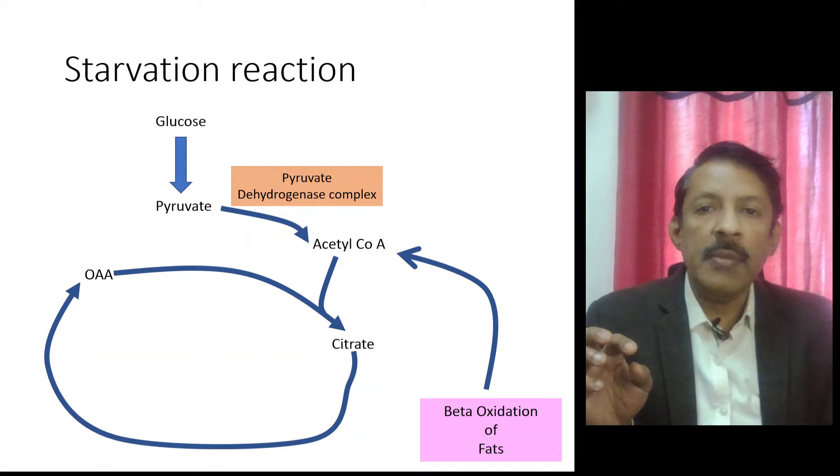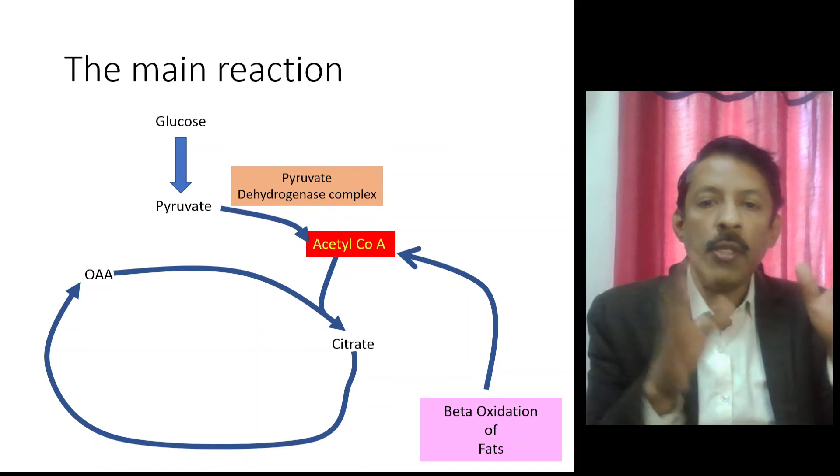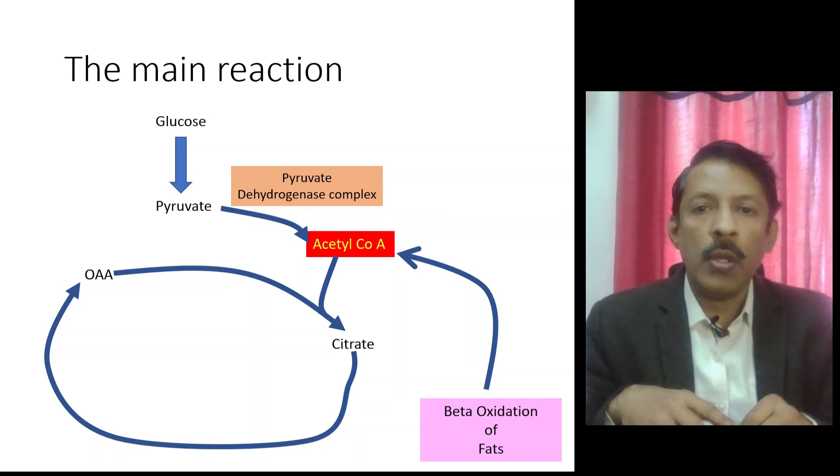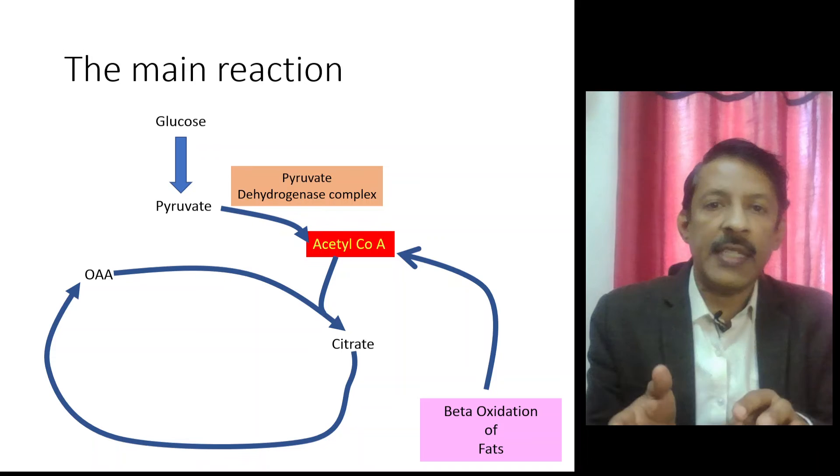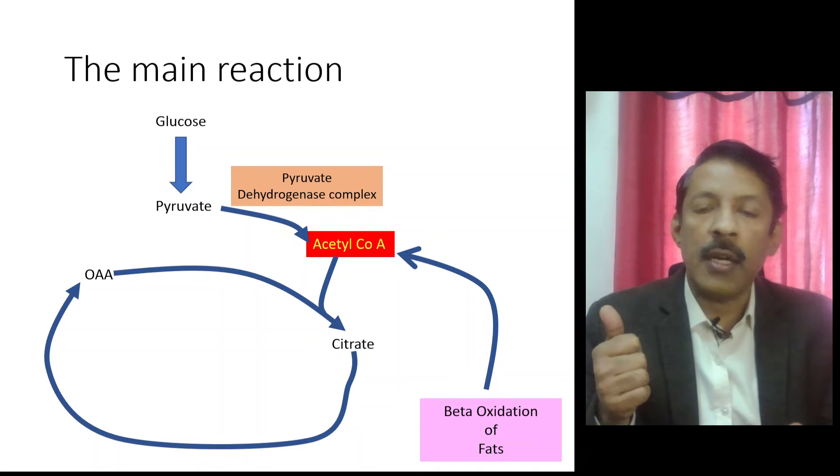In extreme starvation, beta oxidation of fatty acids is in way too much excess and a lot of acetyl coenzyme A is being produced. This excess acetyl coenzyme A binds to all the oxaloacetate and a situation is reached when there is no oxaloacetate in the cell. That is a stage when the TCA cycle comes to a stop.